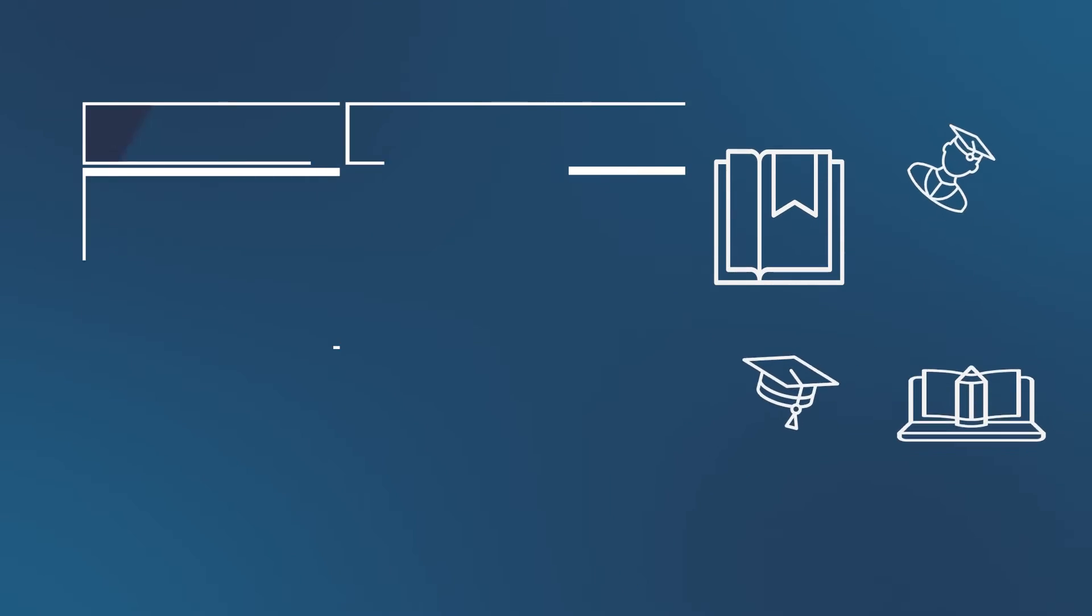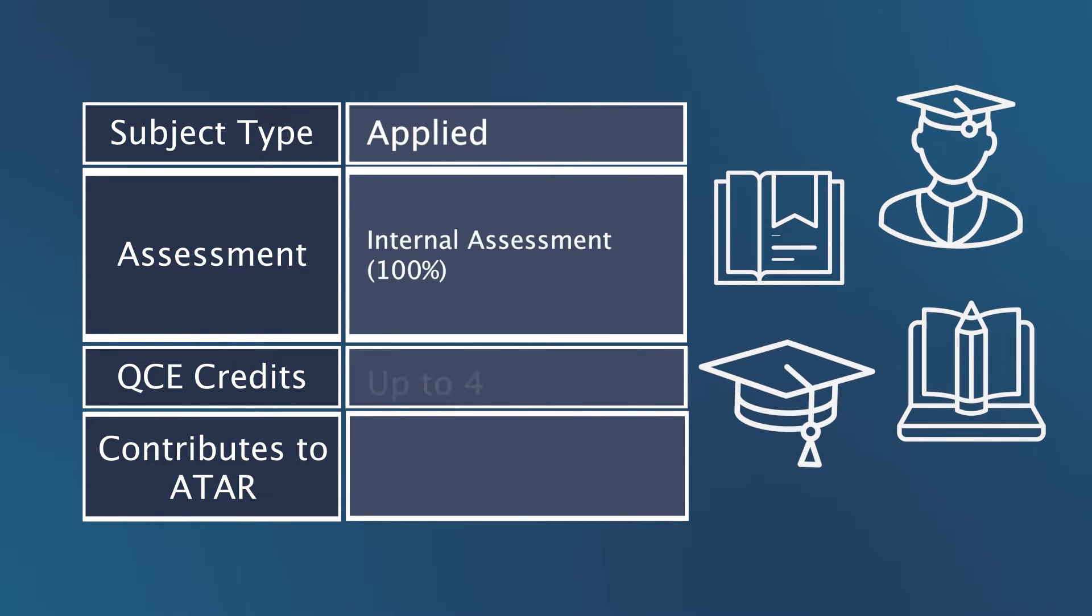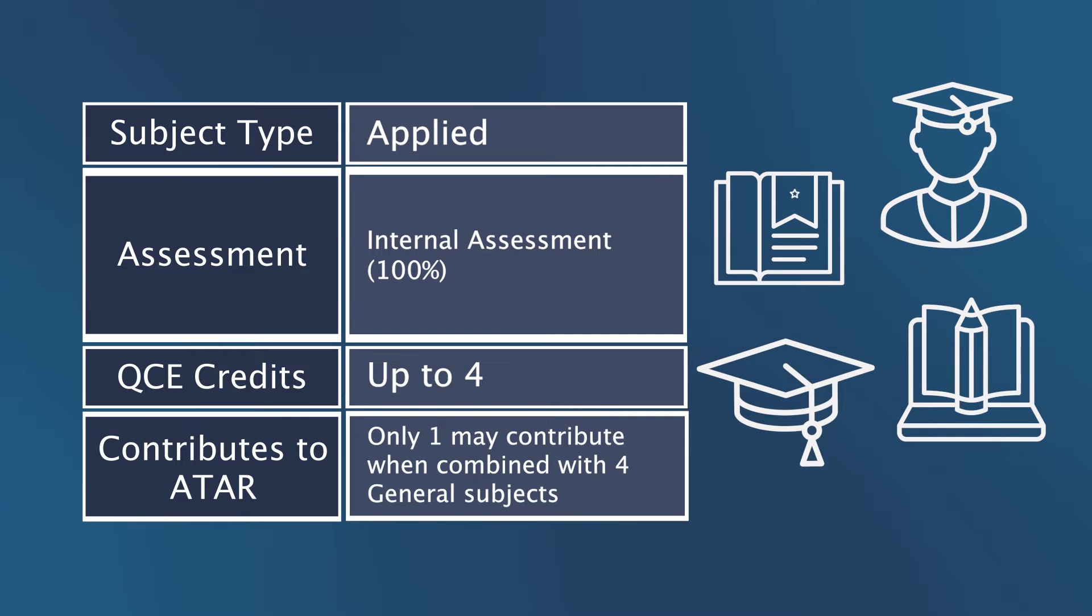Essential Mathematics is an applied subject consisting of four units that are completed over year 11 and 12. The successful completion of all Essential Mathematics units provides up to four core credits towards a student's QCE. Essential Mathematics will only contribute to a student's ATAR calculation if they are studying four general subjects.